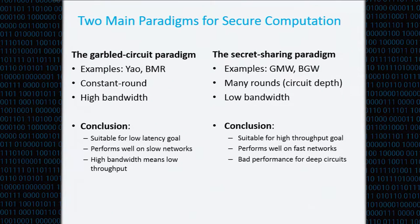The garbled circuit paradigm is more suitable for low-latency goals and performs well on slow networks, while the secret sharing paradigm has higher throughput and performs well on fast networks. Since we were interested in studying secure computation for the internet, we went with the garbled circuit paradigm.